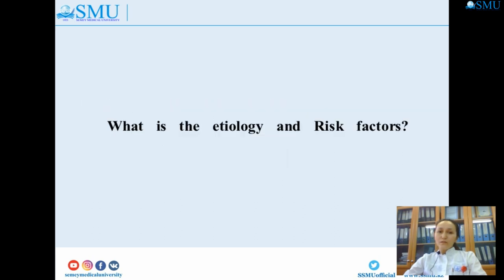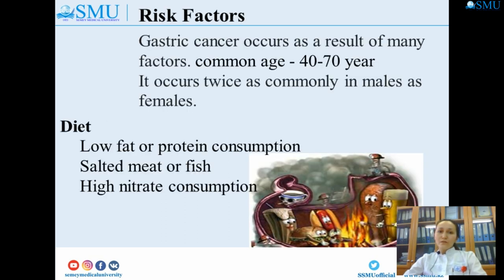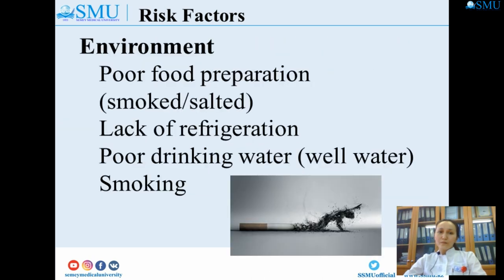What are the etiology and risk factors? Gastric cancer occurs as a result of many factors. Common age is 40 to 70 years. It occurs twice as commonly in males as females. Diet factors include low fat or protein consumption, salted meat or fish, and high nitrate consumption. Environmental factors include poor food preparation, smoked or salted food, lack of refrigeration, poor drinking water, well water, and smoking.